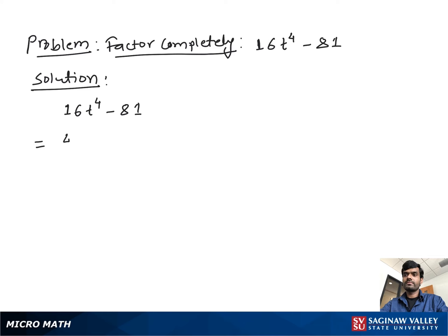We can write 16t to the 4th as 4t square, or to the square, minus 9 square. Now we see this looks like a square minus b square form. A square minus b square equals a minus b times a plus b.